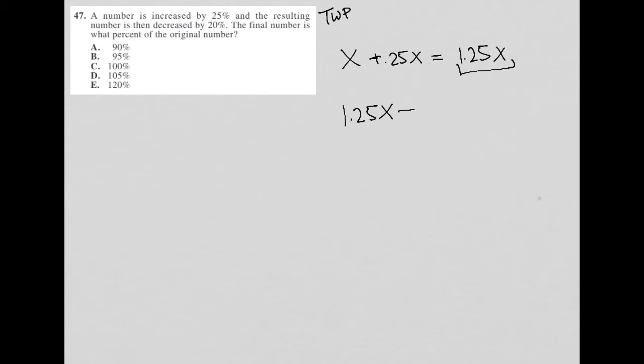I'll say I can subtract 0.2 times the 1.25X, right? Because again, this is my resulting number. And I'm decreasing it, so subtracting. And then 0.2 represents 20%, because whenever we're doing math with percentages, we always use the decimal form of the percentage.